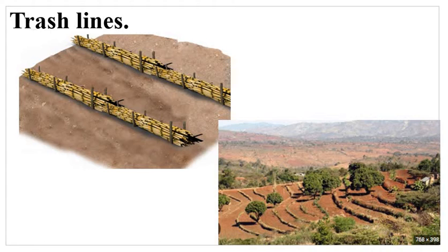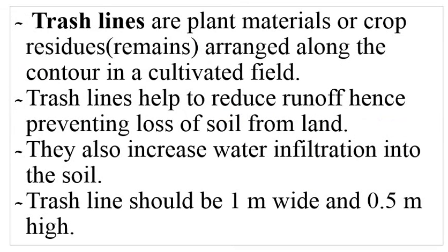Trash lines involve using crop remains or crop residue. One advantage of this method is that the crop remains are able to decompose and add organic matter, improving soil fertility. You can see them being used in a farm, arranged across the hill. Trash lines are plant materials or crop residue arranged along the contour in a cultivated field. They help reduce runoff, preventing loss of soil from the land, and also increase water infiltration into the soil.